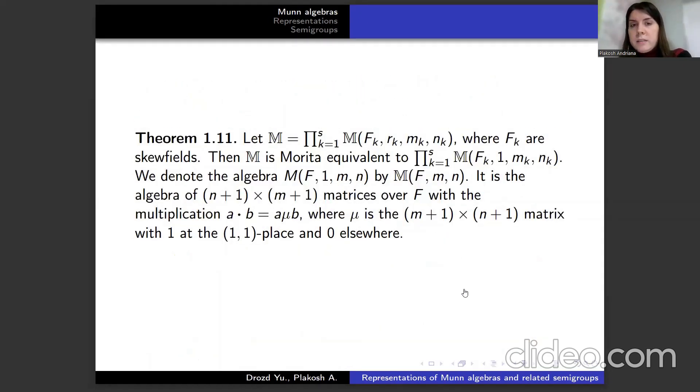Let us formulate a theorem. Let M be a product where Fₖ are skew fields. Then M is Morita equivalent to this product. We denote the algebra M(F₁, M, N) by M(F, M, N). It is the algebra of (M+1) by (M+1) matrices over F with the multiplication A·B equal to A∘μ∘B, where μ is (M+N) by (M+N) matrix with 1 at the (1,1) place and 0 elsewhere.